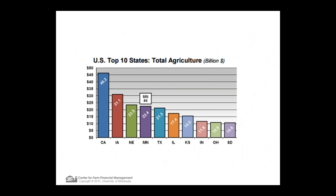A little bit about Minnesota and my background. Minnesota is a large agricultural state. It is the fourth largest producer of agricultural products by dollar volume, surpassed only by California, Iowa, and Nebraska. We sell about $22 billion worth of agricultural products out of Minnesota each year.